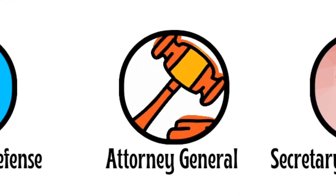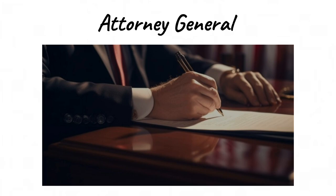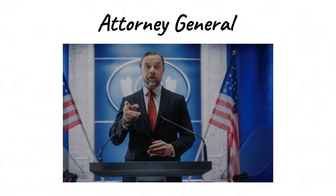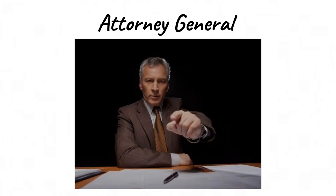Attorney General. The Attorney General is the chief legal officer of the United States government and the head of the Department of Justice. Appointed by the President and confirmed by the Senate, the Attorney General serves as the top law enforcement official, representing the federal government in legal matters and advising the President and other executive branch officials on legal issues.